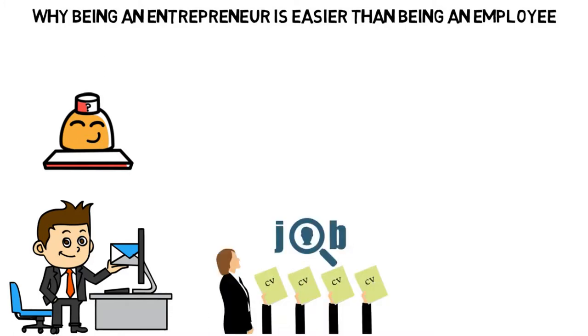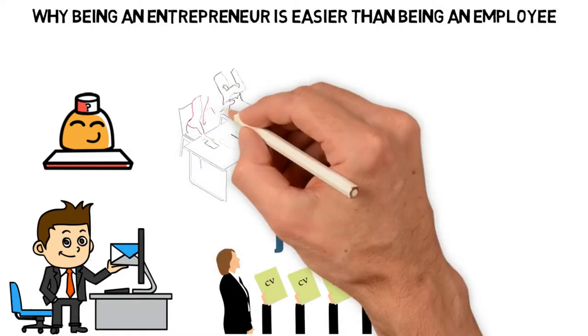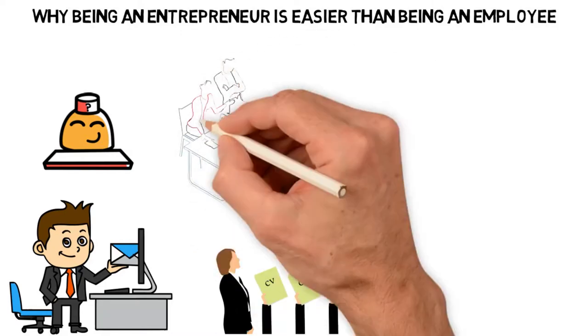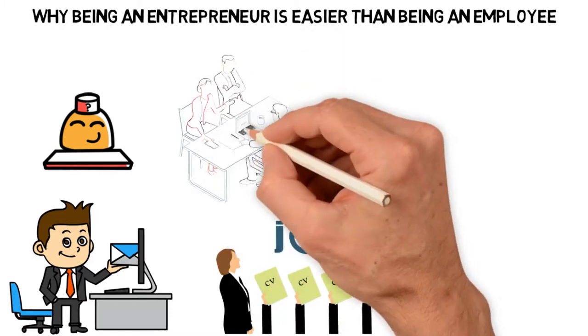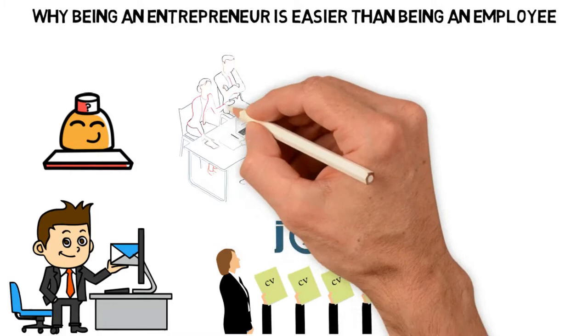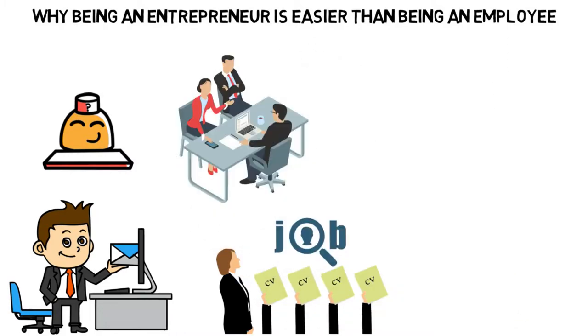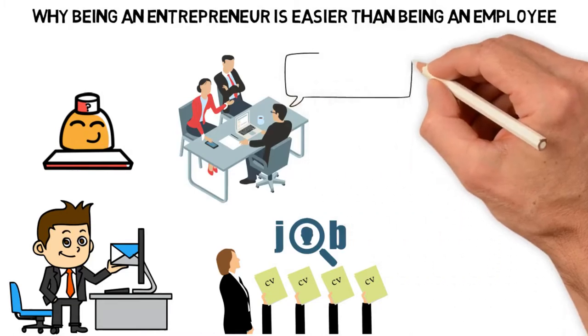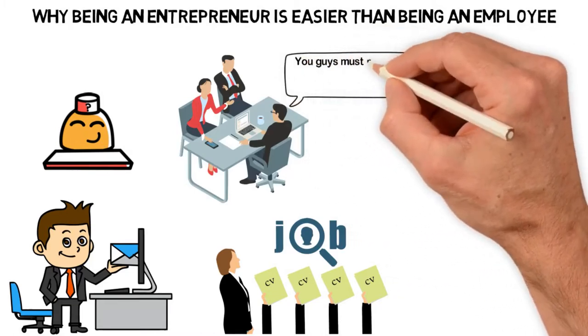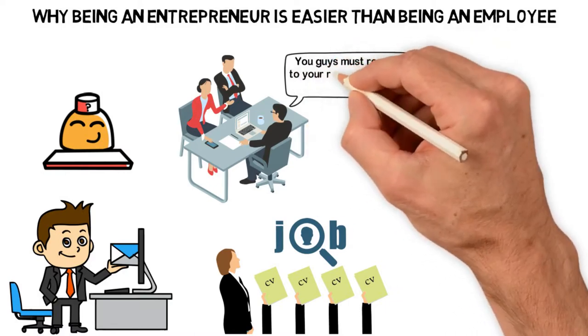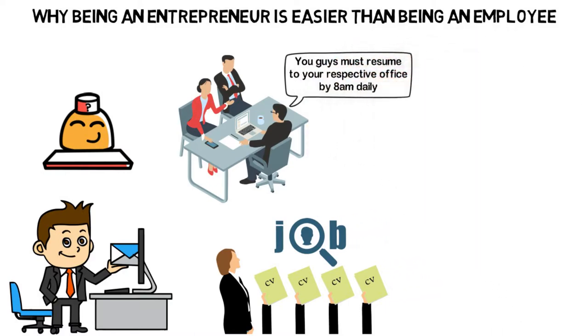But that's just the first chapter of the dictionary. Even after you are employed, then you'll be given what is called the company's policy. Then you'll be technically told how you must live your life. Not really so straightforward but by the time someone tells you when you must resume to the office, the clothes you must wear and in some cases, the makeup to wear. Then that's the definition of a god. Yet, most people think that it's easier to be an employee than it is to be an entrepreneur.